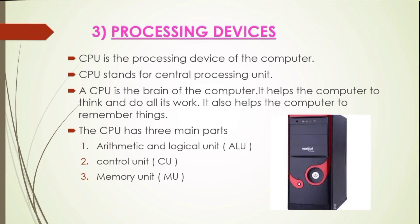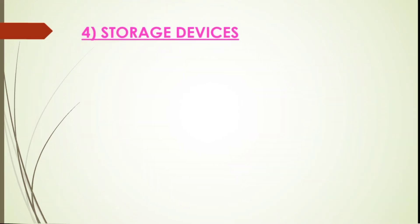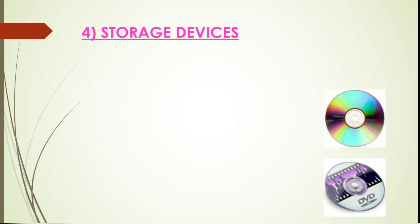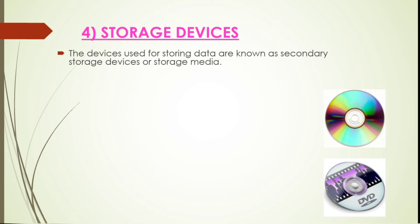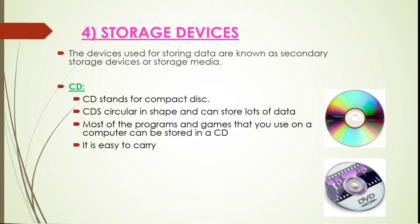The Memory Unit of the CPU is used for memory and storage purposes. Now let's discuss about the storage devices of a computer. The devices used for storing data are known as secondary storage devices, or storage media.